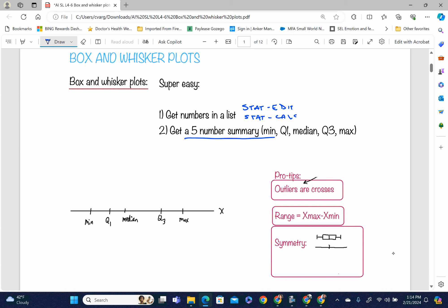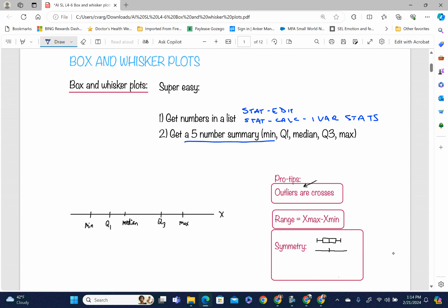Then CALC, and it's always 1-Var Stats. Just a refresher about what this means. If you have a set of numbers, we're going to figure out what the box and whisker plot is. The min and the max are our whiskers. Q1 to Q3 is our box. The median is the line in the middle of the box. Then you connect this with the whiskers. This is our box part, and these are our whiskers.